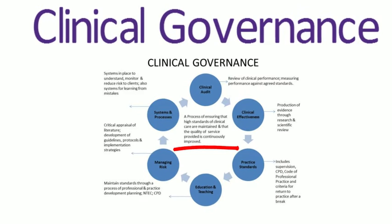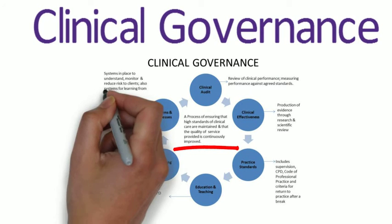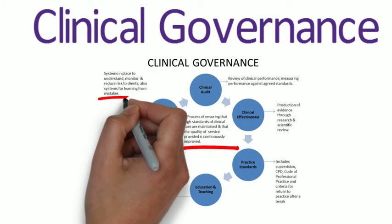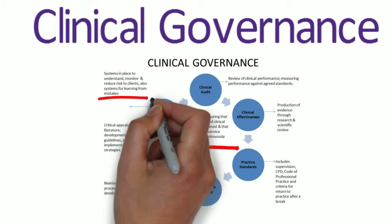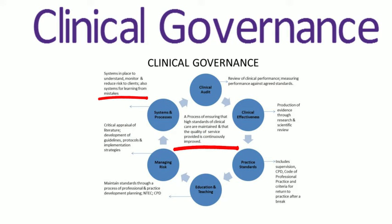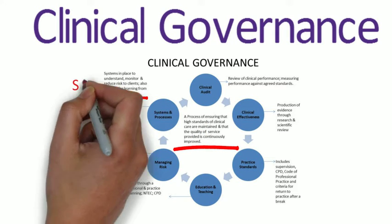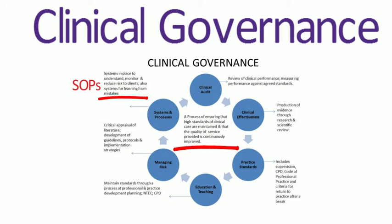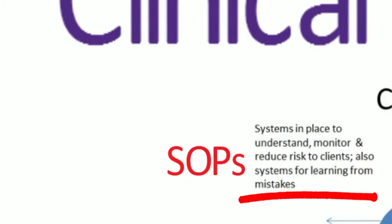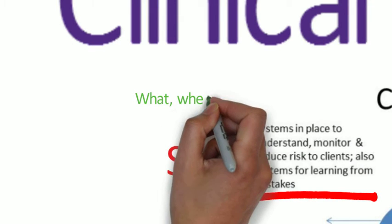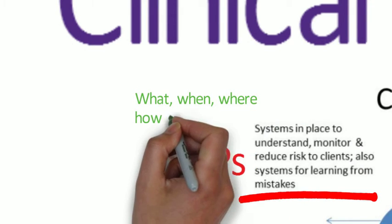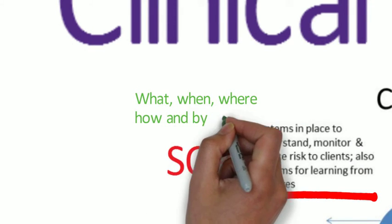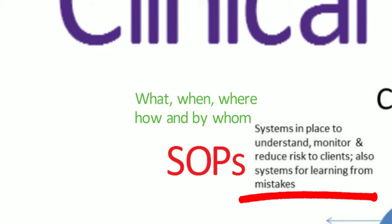An SOP is quite simply a document which you and the other staff will work to. It will specify in writing what should be done, when it should be done, where it should be done, and by whom. So it's very specific — it outlines everything within a process.